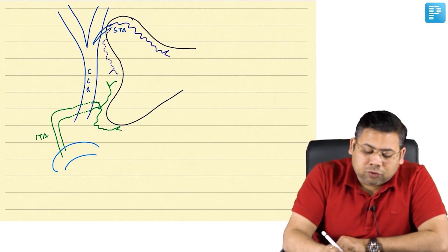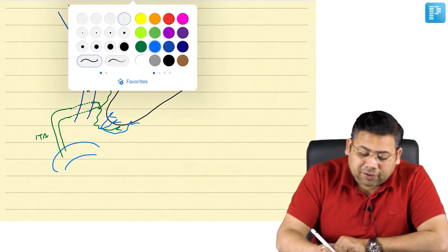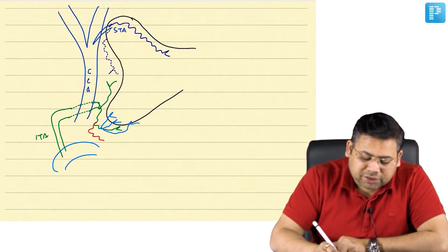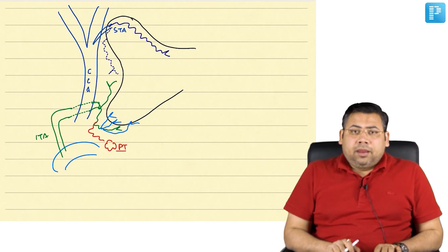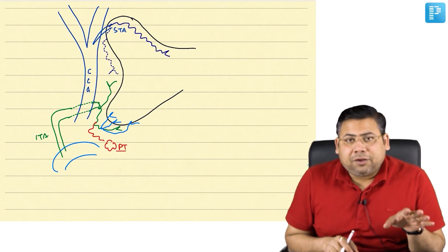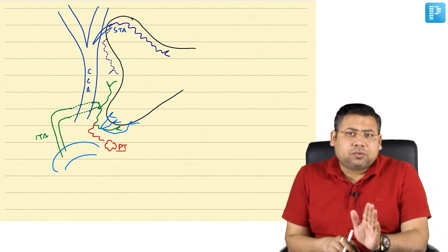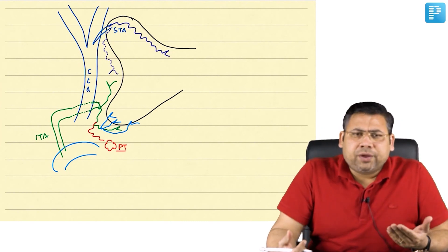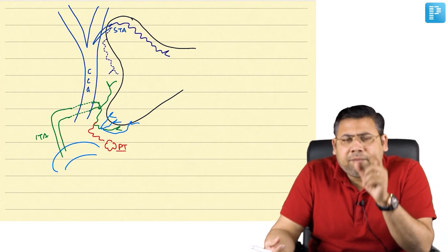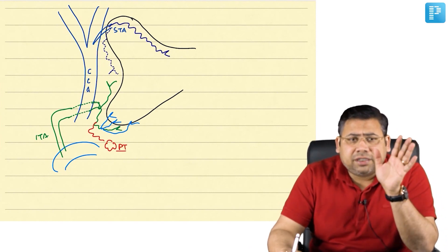The inferior branch also gives supply to the parathyroids. So one point is clear — you cannot ligate the inferior thyroid artery away from the gland; you have to ligate it as close as possible to the gland. Remember a rule: stay as close to the gland and you will never damage any structure.